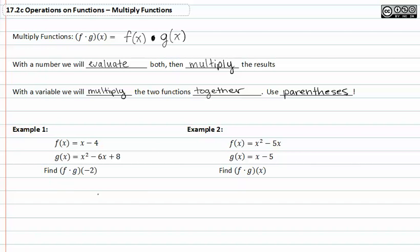In example one, we have f is equal to x minus four, and g which is equal to x squared minus six x plus eight. Find f times g of negative two. In example one, we have a variable substituted with an actual number, and so with a number we will evaluate both and then multiply the results.